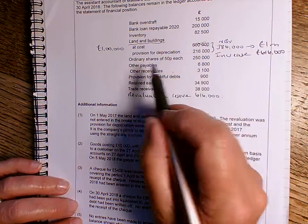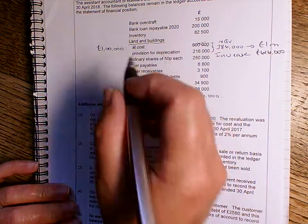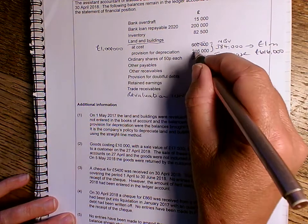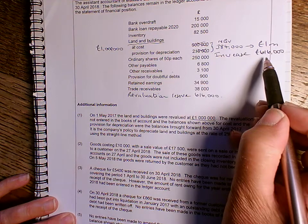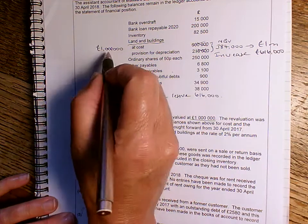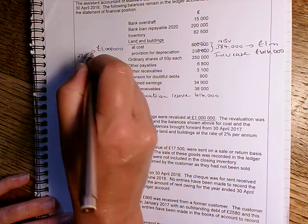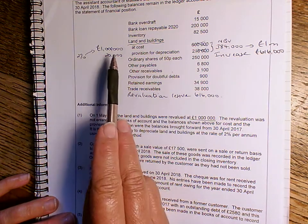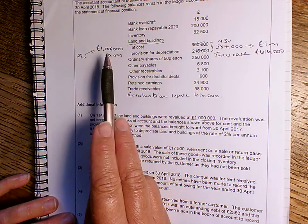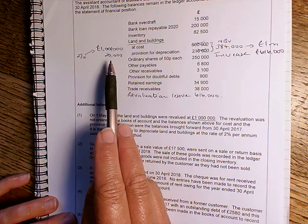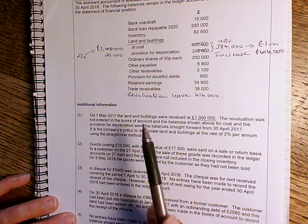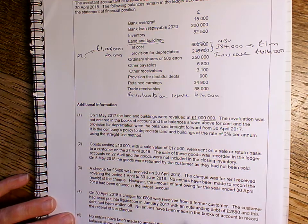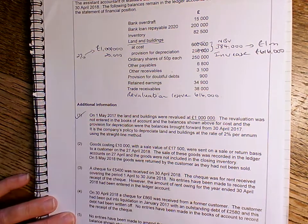So what effectively happens here is that we bump up the value to £1 million, and then we start the depreciation again. So that's effectively written off into this revaluation reserve. So our depreciation is just going to be 2% of the million pounds. So I reckon that's going to be £20,000. So when we do our statement of financial position for 2018, we'll have £1 million showing in the cost, £20,000 in the depreciation column, which will give us £980,000 in the right hand column, which we then add on to the net current assets. So that's point one dealt with.